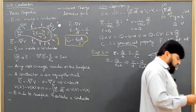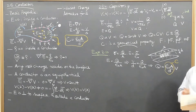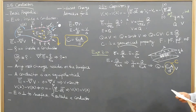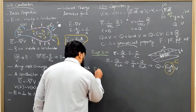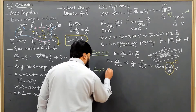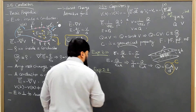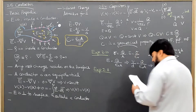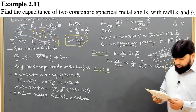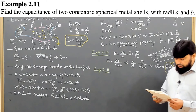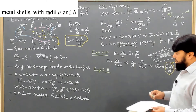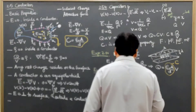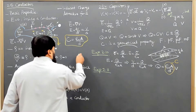In the same sequence we can solve the next example, Example 2.11. What Example 2.11 is saying — you can see it on the screen as well — is: find the capacitance of two concentric spherical metal shells with radii a and b.